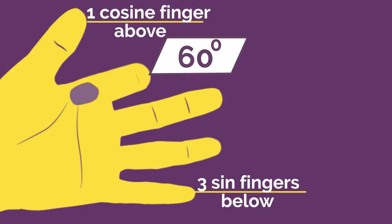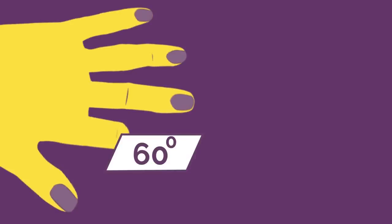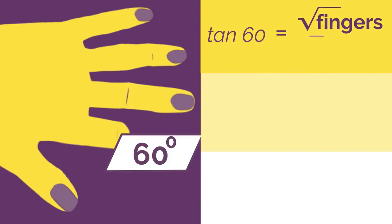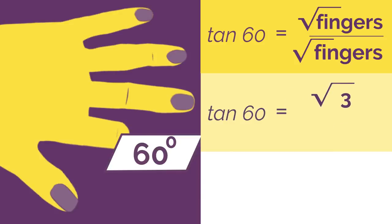For tan, we flip our hand over and we have three sine fingers above and the one cosine below. So tan is square root fingers over square root fingers. So square root 3 over square root 1, which simplifies to root 3.